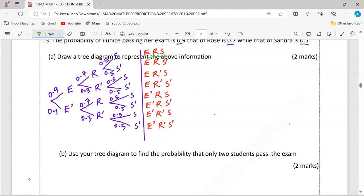The probability only two students pass can be the following cases. We can have this case whereby Eunice and Ross pass at Sandra fails. We can have the next case whereby Eunice and Sandra are passing, but Ross alone is failing. Or, Eunice alone fails, but Ross and Sandra pass. Those are the only possibilities whereby we have two students strictly passing.